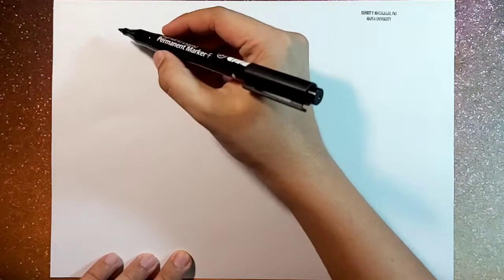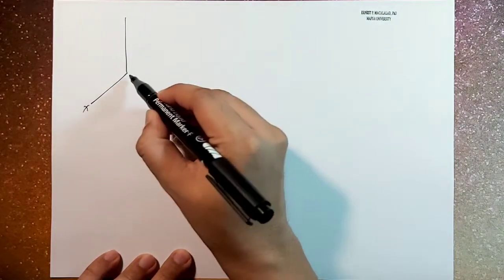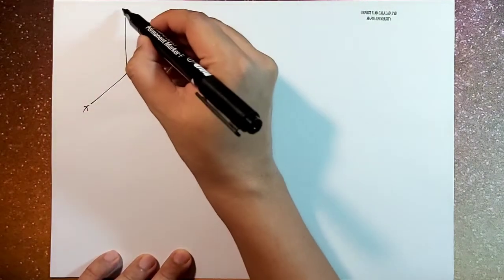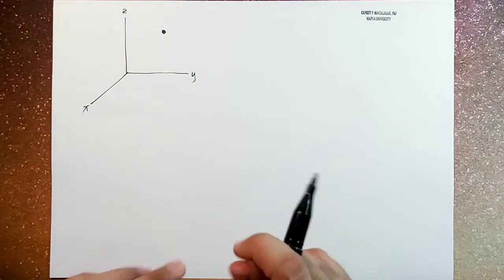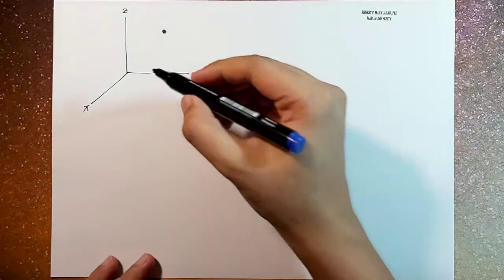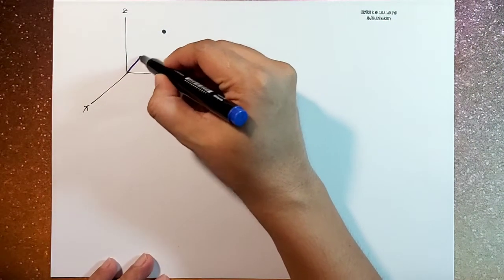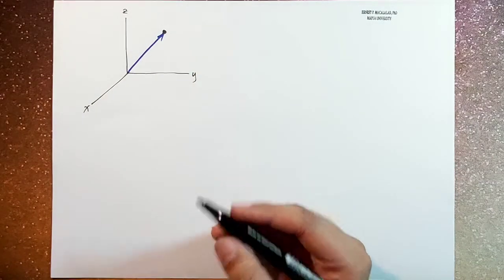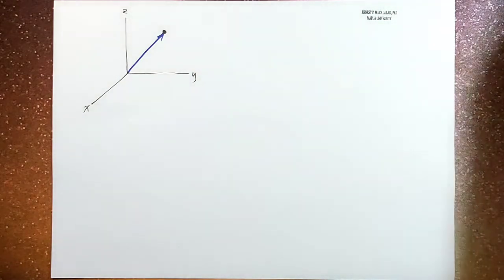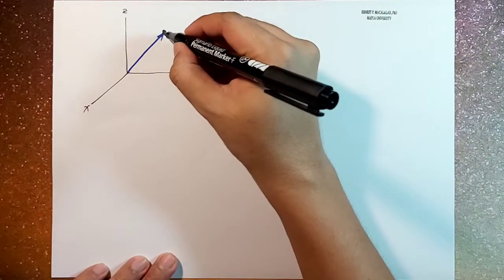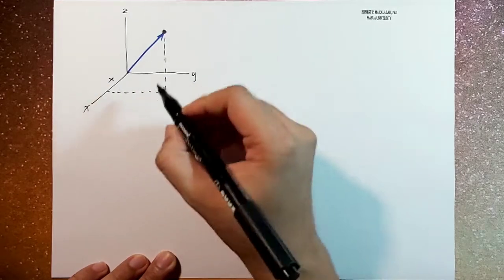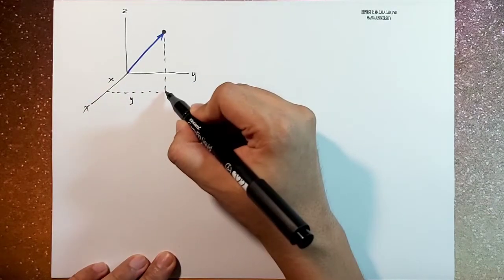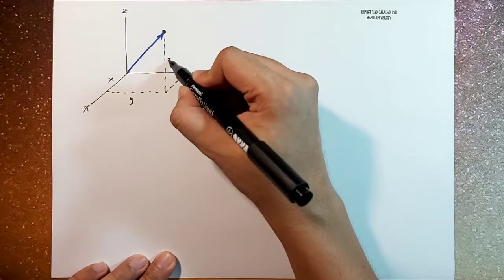Okay, now if this is your Cartesian coordinate system, x, y, and z, and this is your point p, your point p is defined by this position vector. Now this position vector has three components. It has an x, y, and z component.